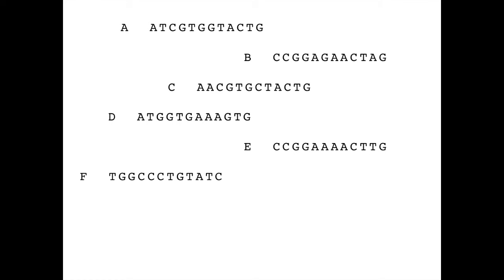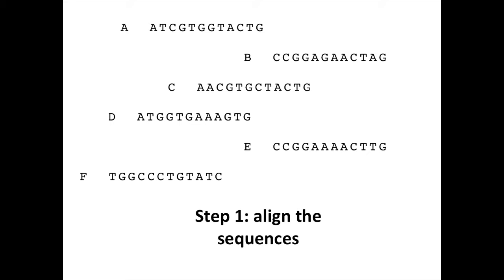In our simplified example, we have a set of six sequences. These are the equivalent stretch of sequence taken from the equivalent gene from each of the six species, and we're just going to refer to the species as A through F. The first step in the process is to line the sequences up against one another. Here we have the sequences aligned so that the equivalent nucleotide in each sequence lines up to form a column, which makes comparing the sequences much easier.